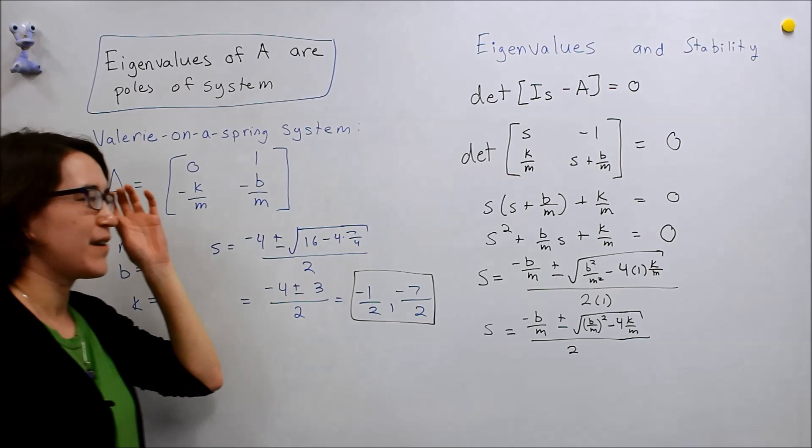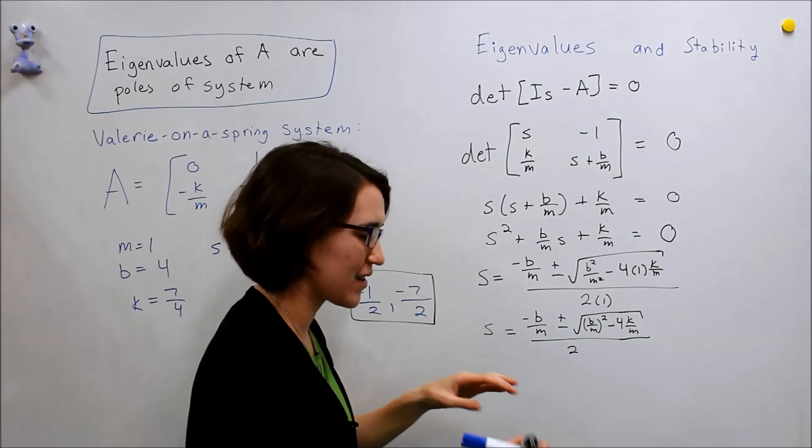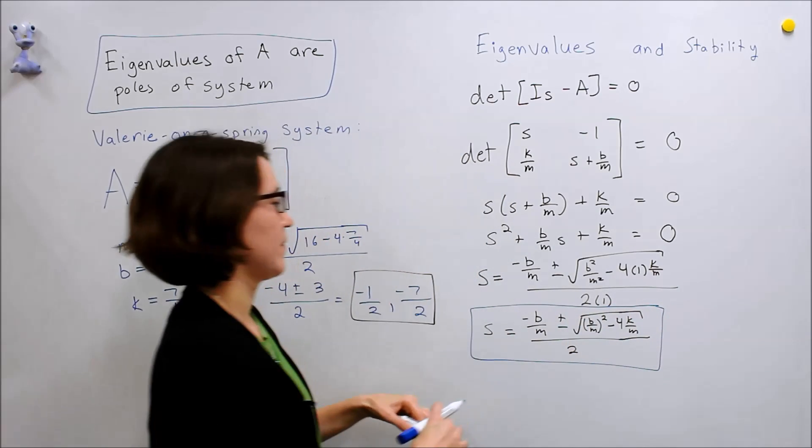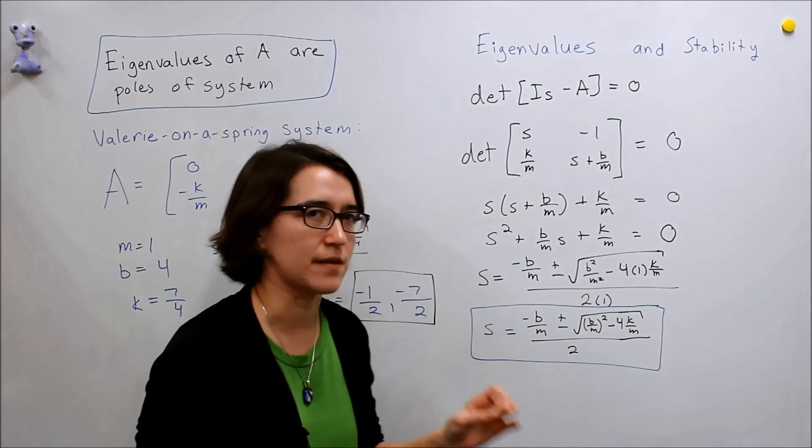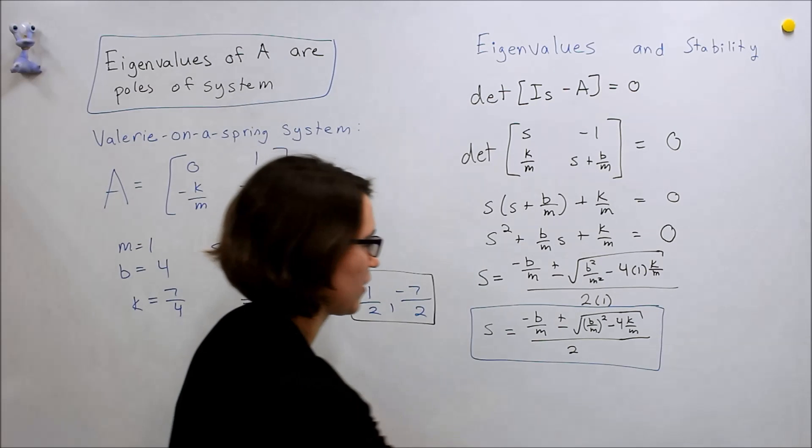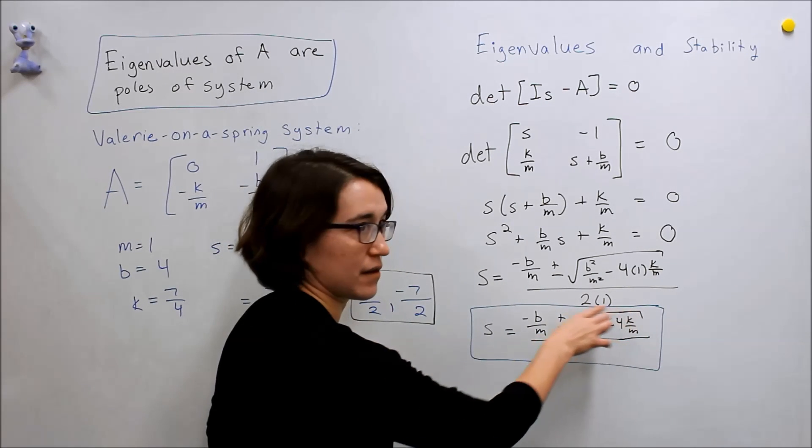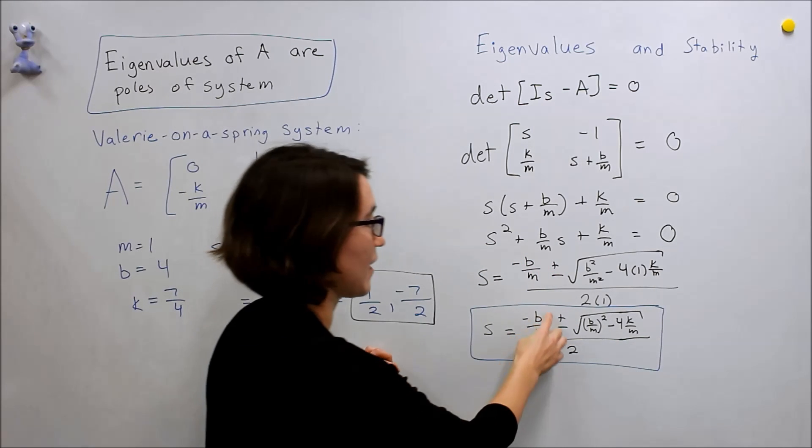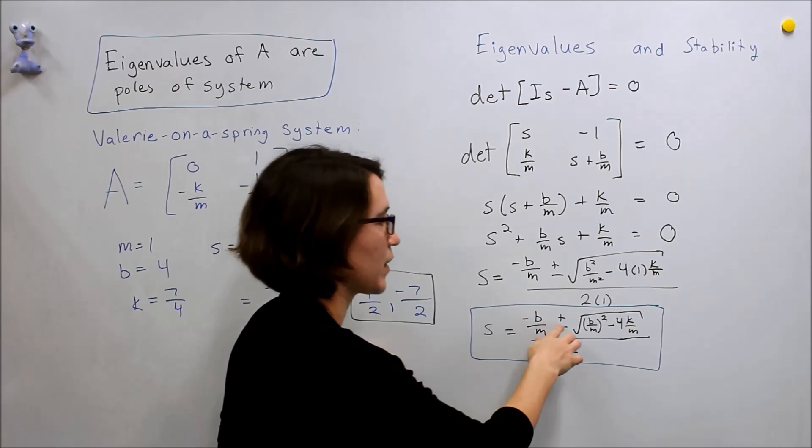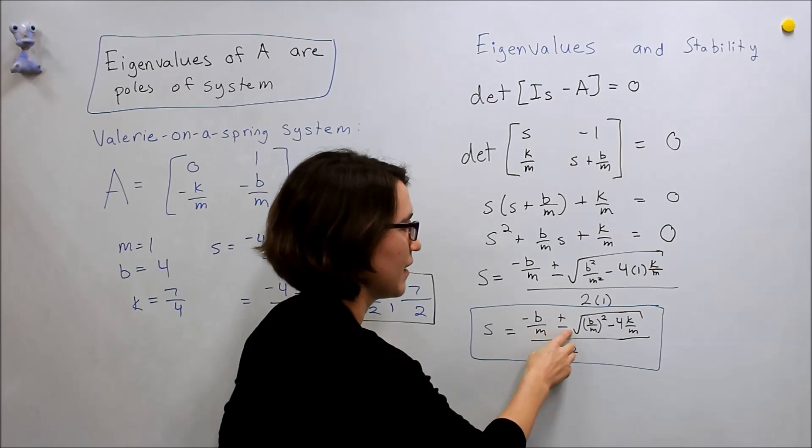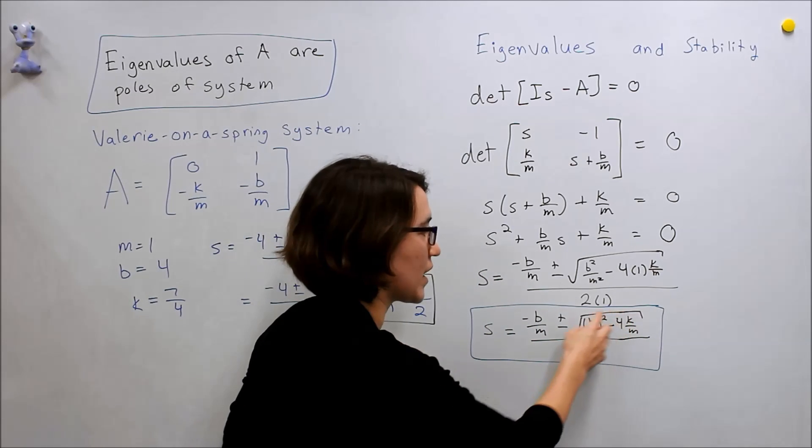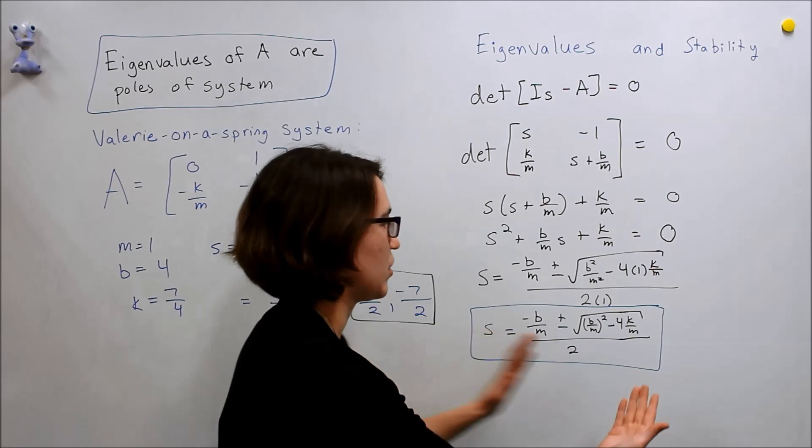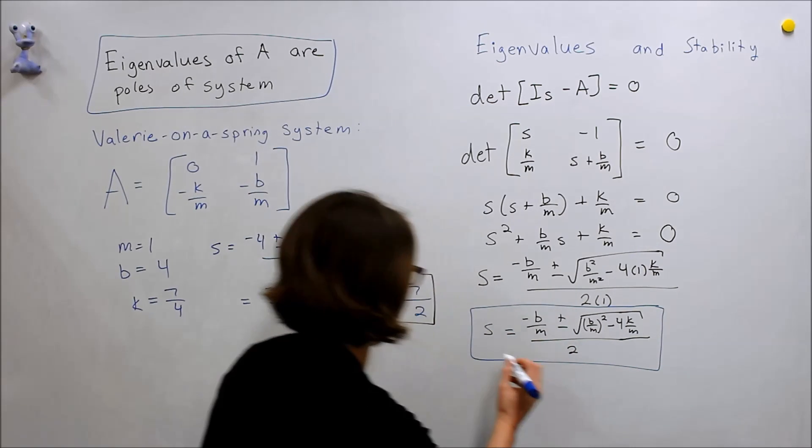However, if we look back at this, we can actually determine something about the stability without assigning values, but we just have to think about what our system means. So if we look back at this relation, in the numerator, we see that this is a negative value, so it's going to start in negative, and then we're going to either plus or minus, it could be an imaginary number. So if this quantity is negative, you'll have an imaginary value.